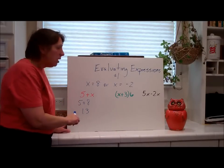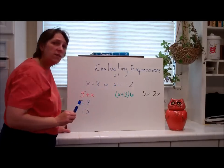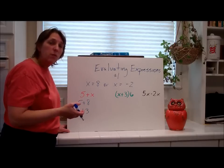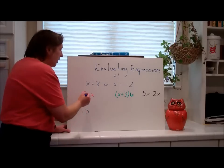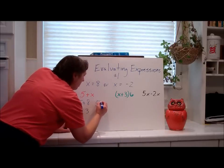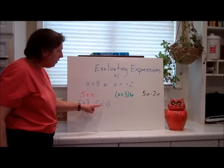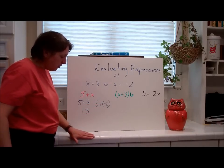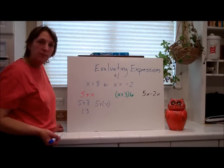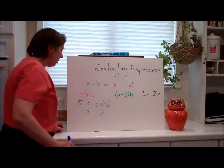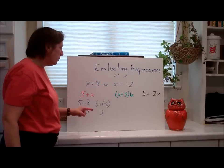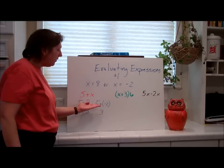I'm not done with that problem because x also equals negative 2. They want to know what is 5 plus x when x is 8, and then what is 5 plus x when x equals negative 2. Underneath, right next to it, we write 5 plus negative 2. Notice I put negative 2 in parentheses — you have to be careful with signs when you plug them in. 5 plus negative 2 is 3. So when x equals 8, 5 plus x is 13; when x equals negative 2, 5 plus x is 3. You have to show the substitution — that counts as a point.